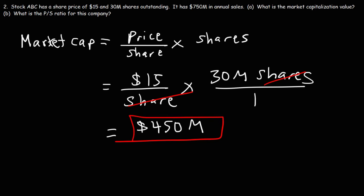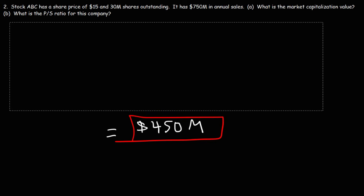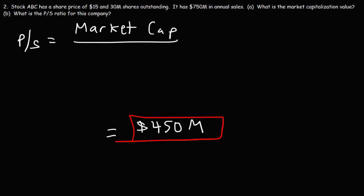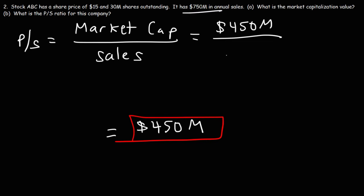Now let's move on to part B: what is the price-to-sales ratio for this company? Just like before, the PS ratio is going to be the market cap divided by the sales. We have a market cap of $450 million and annual sales of $750 million. So it's going to be $450 over $750, which is 0.6.